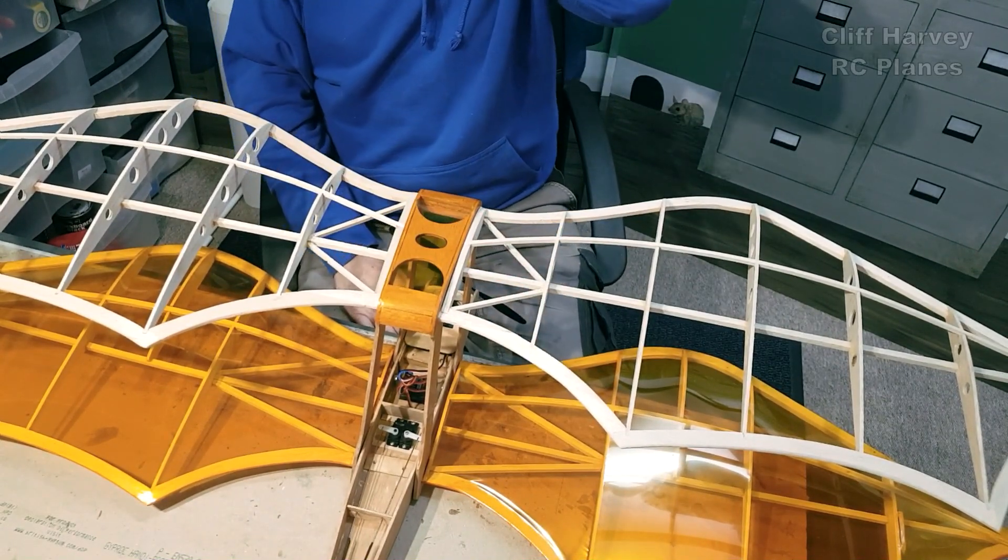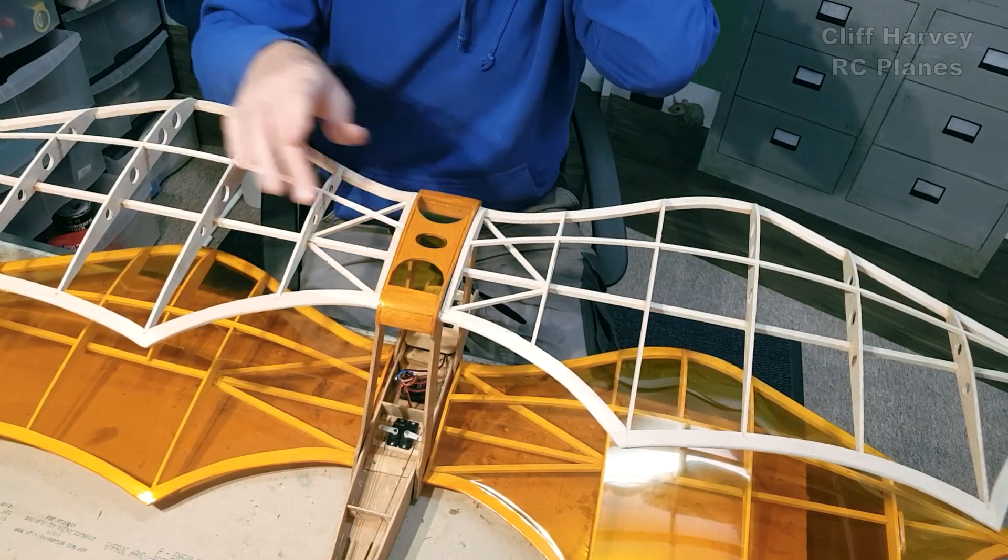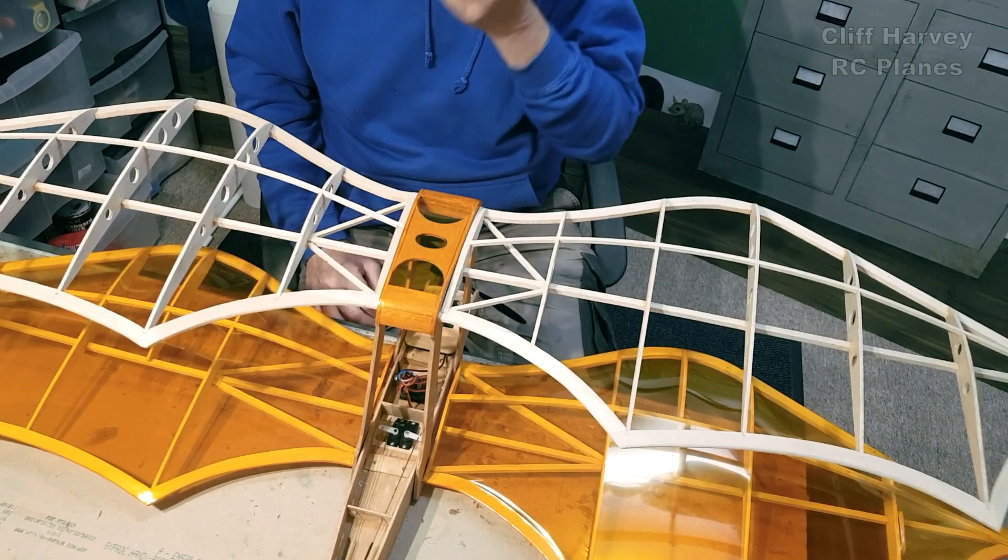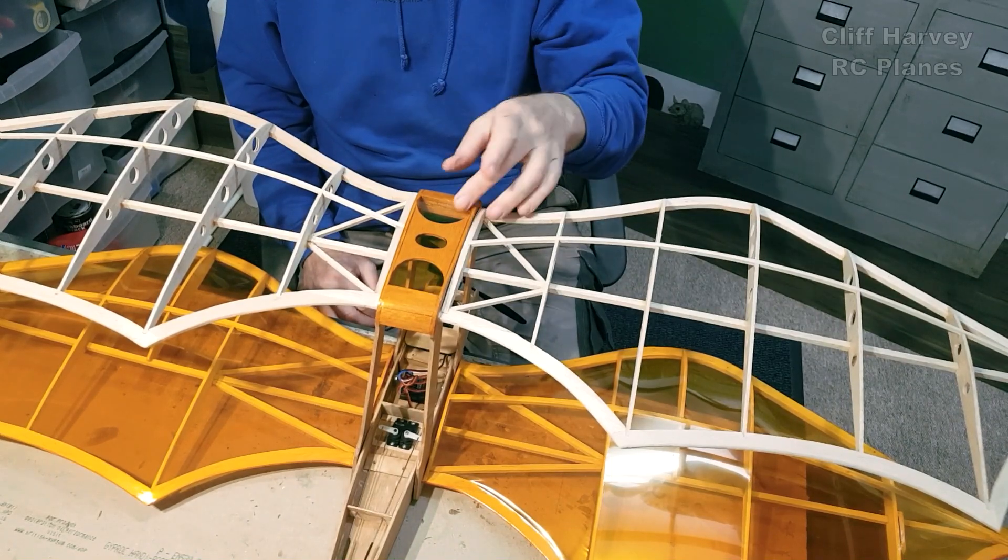It's nice, sort of picks up the theme of the ribs being lightened. It is plywood after all, so it's worth cutting out.